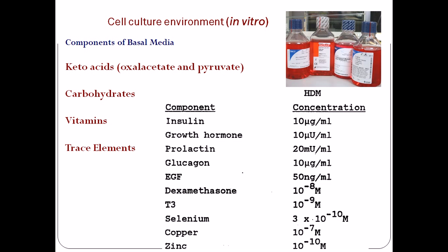Vitamins serve as precursors for numerous cofactors important for metabolism inside the cell. B group vitamins are necessary for cell growth and proliferation — vitamin B12 and B6 are required for growth and proliferation. Common vitamins found in basal media include riboflavin, thiamine, and biotin (B7).